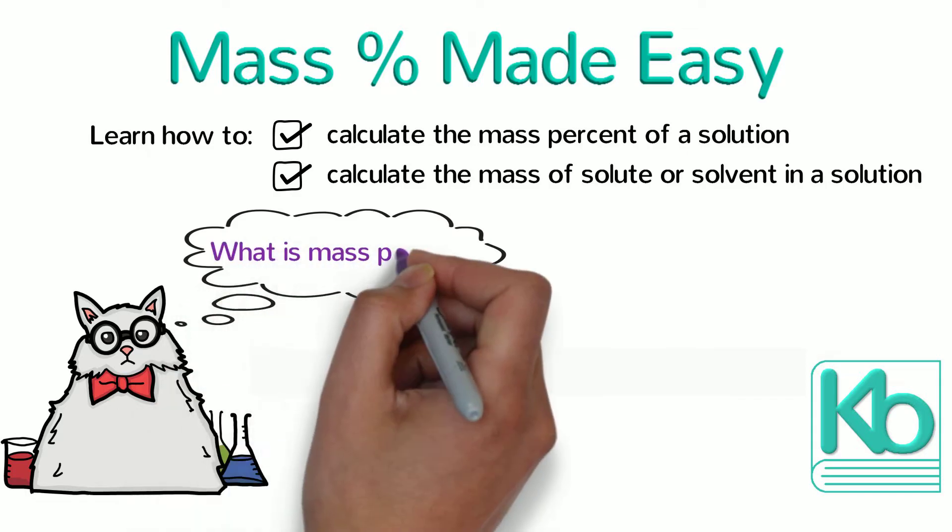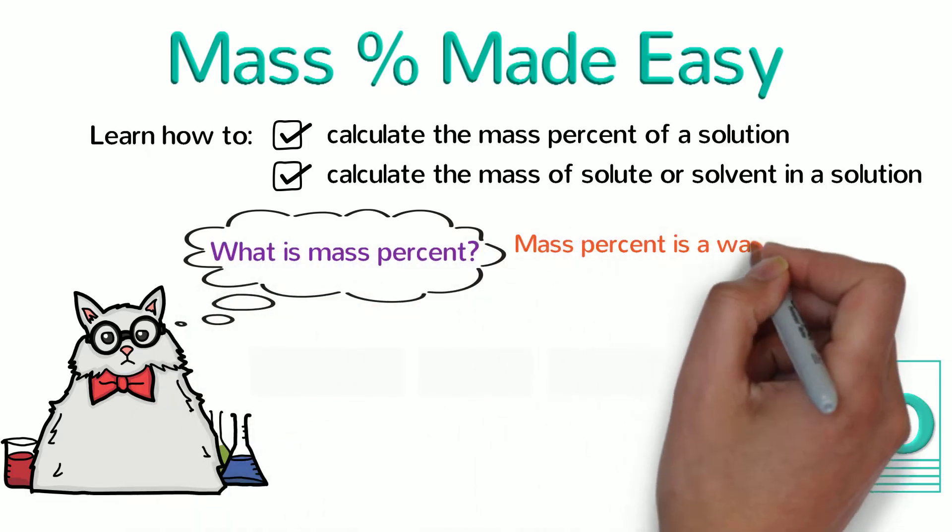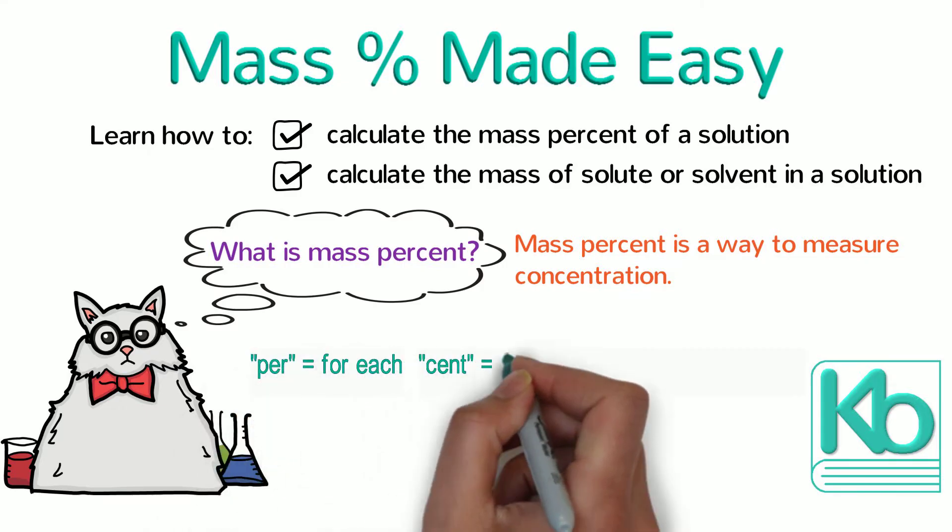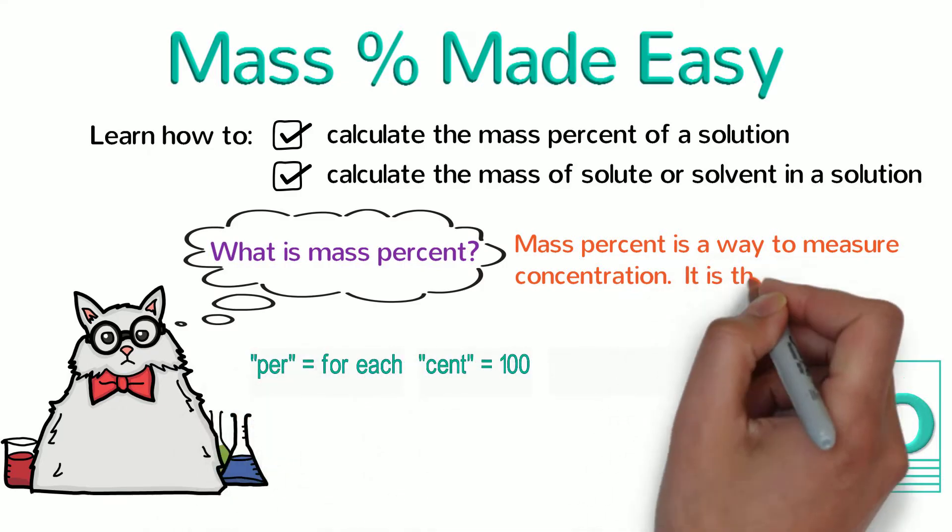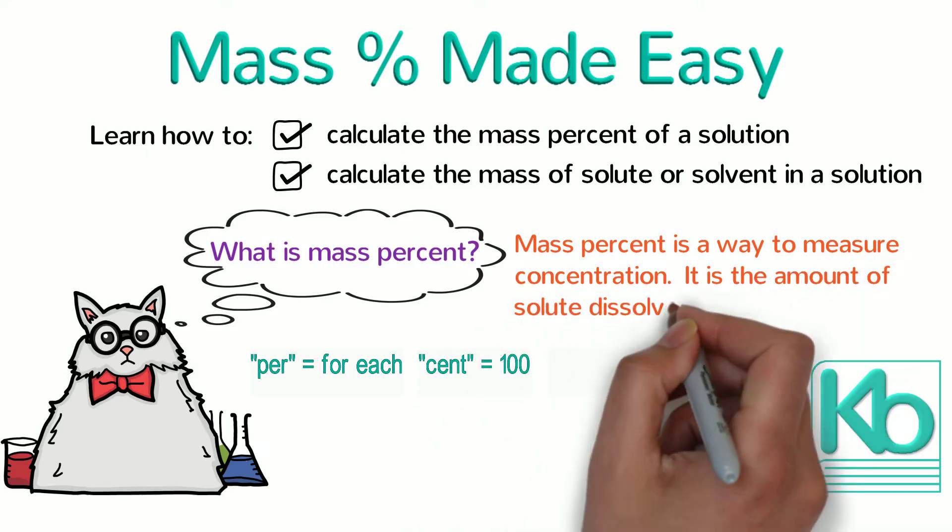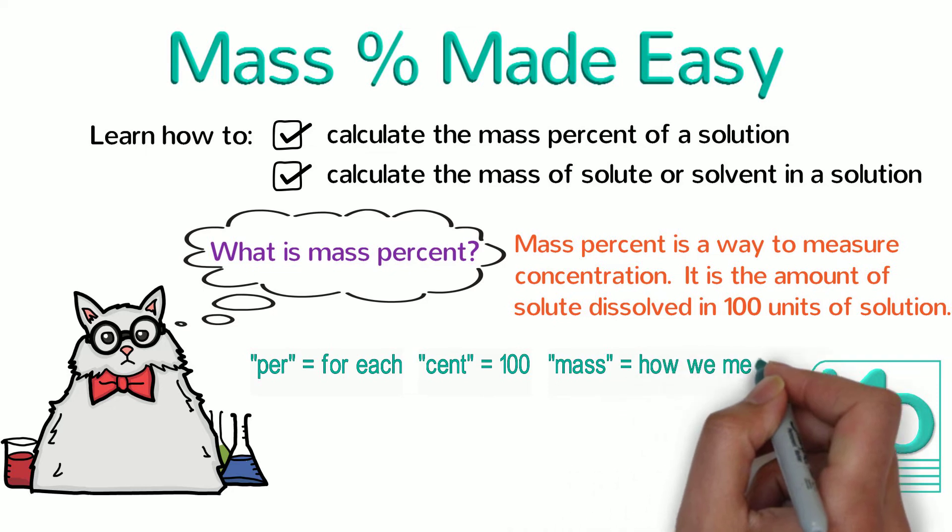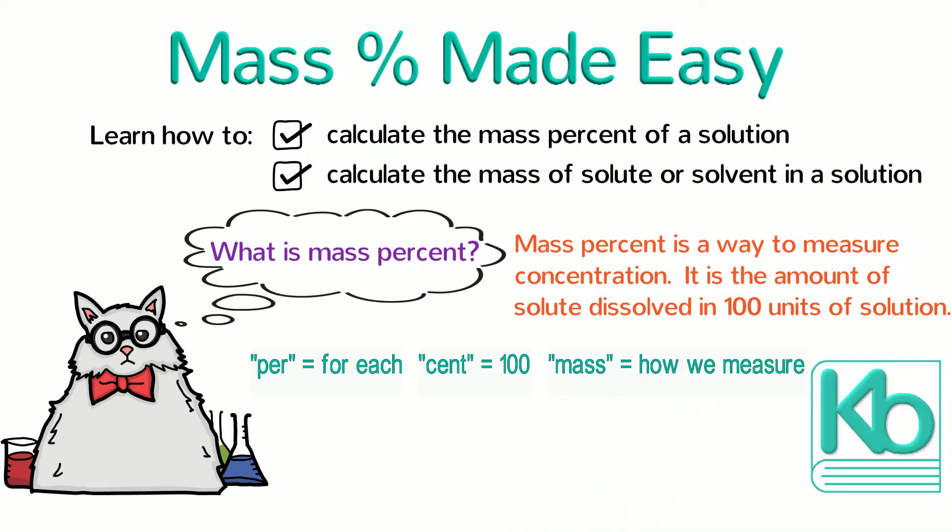But first, what is mass percent? Mass percent is a way to measure concentration. Per means for each, and cent is Latin for 100, so percent refers to the amount of solute dissolved in 100 units of solution. Mass simply refers to how we measure both the solute and the solution.